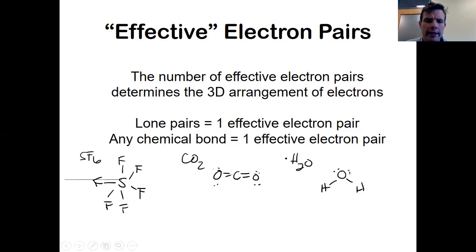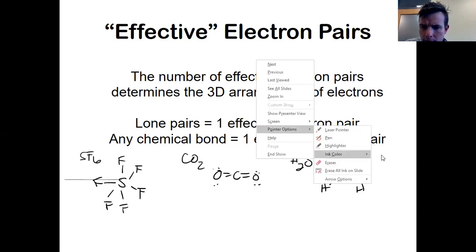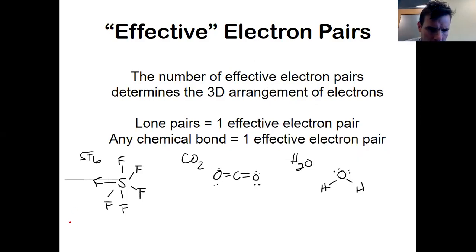So how do I count effective pairs? Here we go. Any chemical bond counts as one effective pair. So one, two, three, four, five, six. Six effective pairs. In this one, any chemical bond counts as effective pairs. So there's one double bond here and one double bond here. That counts as two effective pairs.